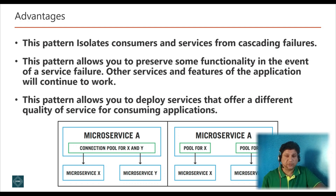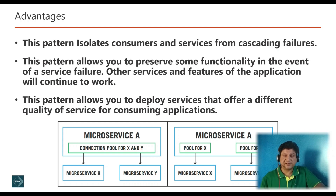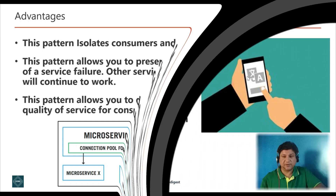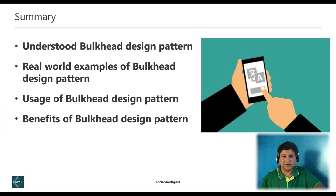The bulkhead design pattern helps isolate consumers and services from cascading failures. An issue affecting a consumer or service can be isolated within its own bulkhead, preventing the entire solution from failing. This pattern allows you to preserve some functionality in the event of a service failure — other services and features of the application will continue to work. It also allows you to deploy services offering different quality of service for consuming applications; a high priority consumer pool can be configured to use high priority services.